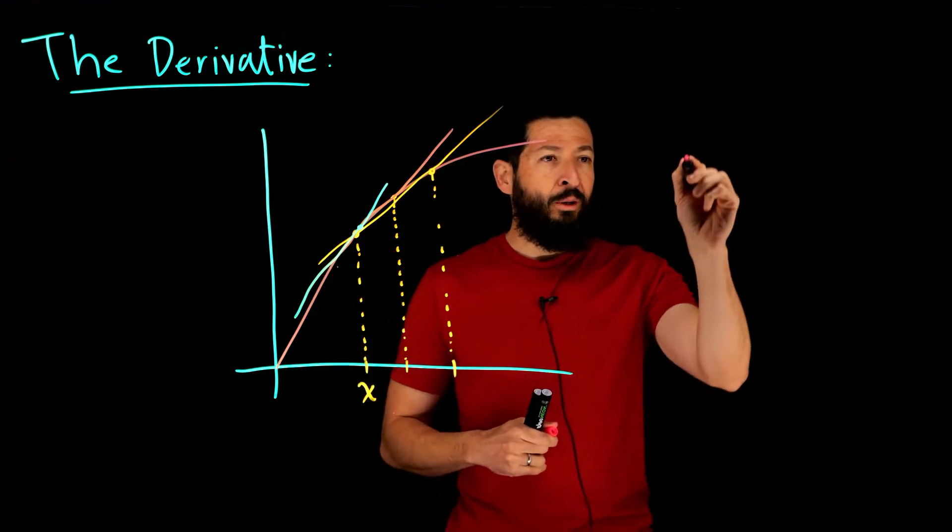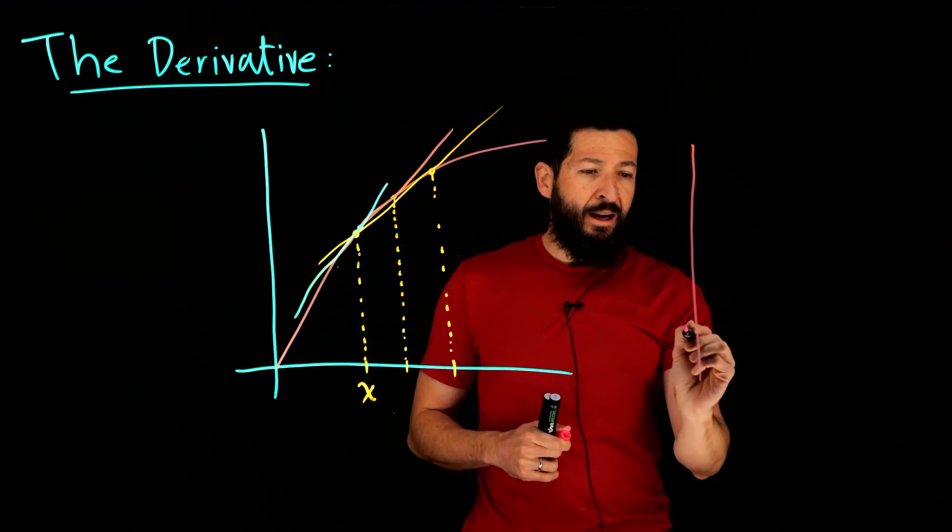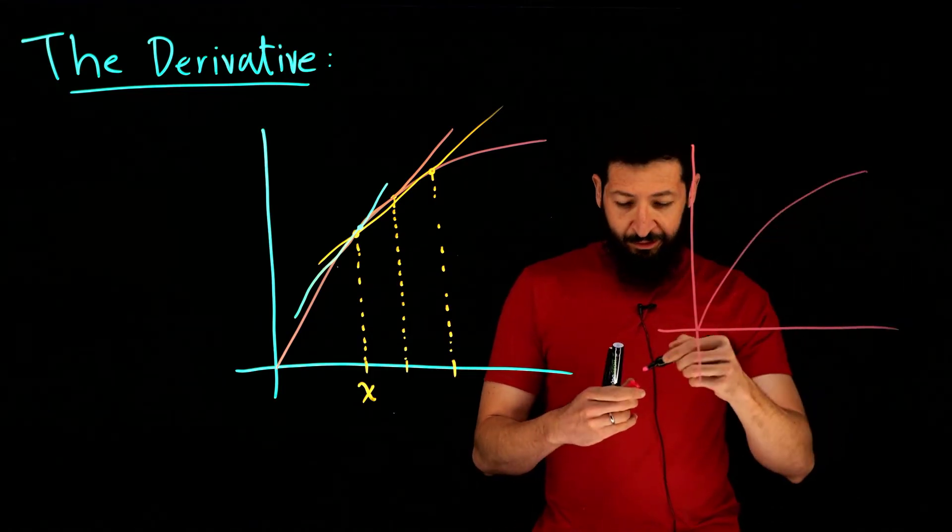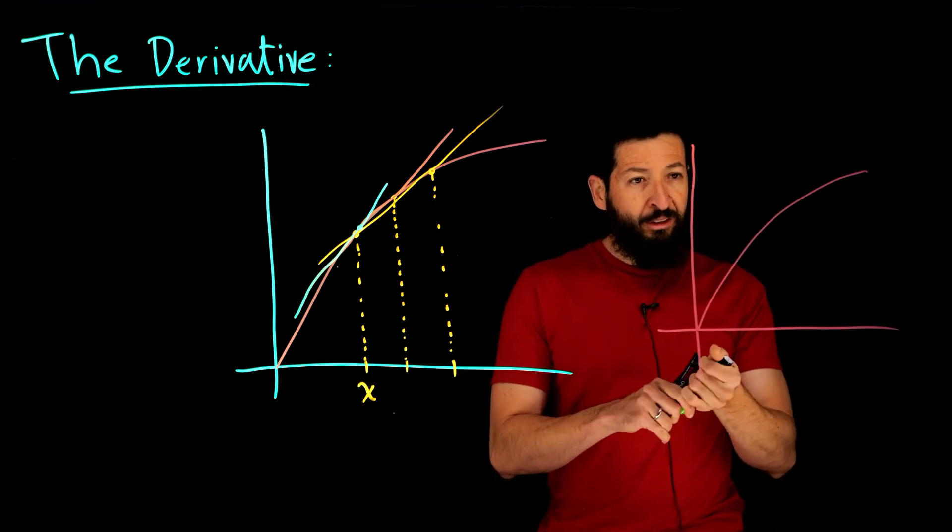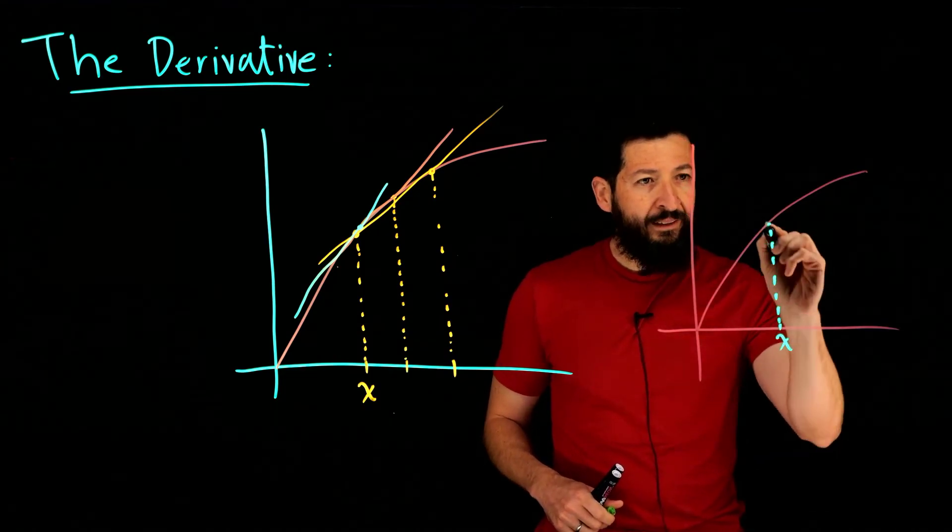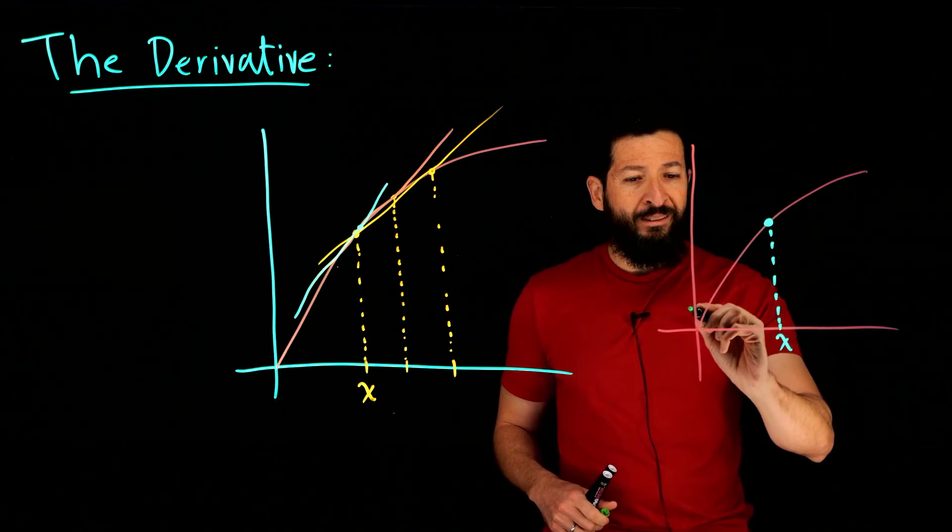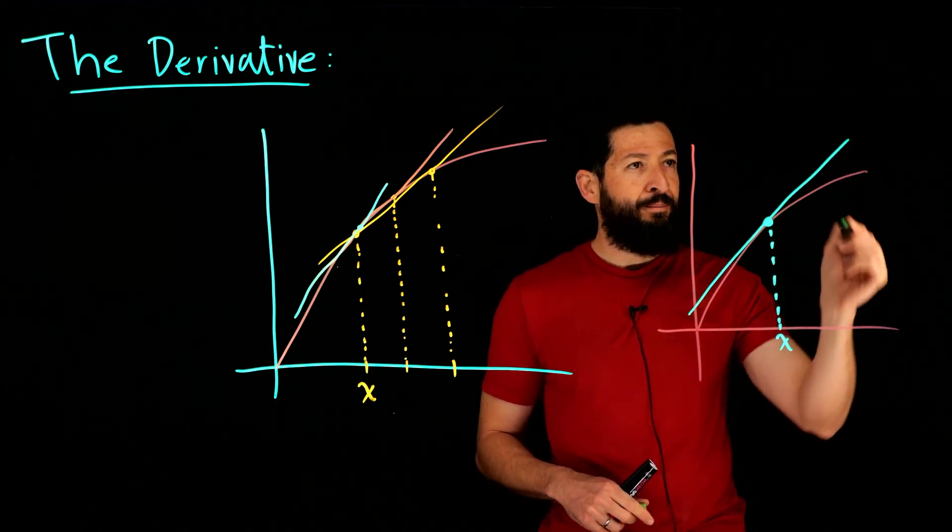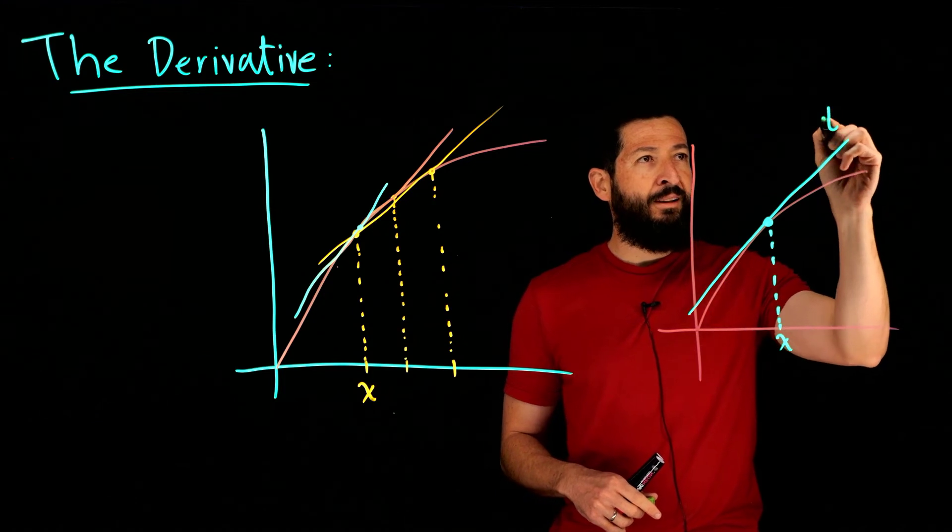What you're going to end up with is you're going to have your x here and the line will no longer be secant, it will be tangent. So this is going to be called the tangent line.